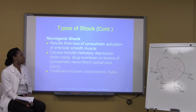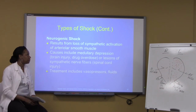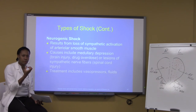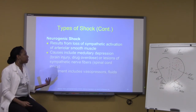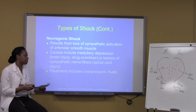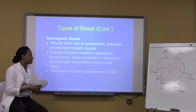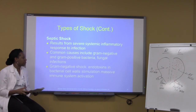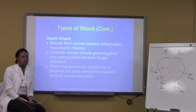Neurogenic shock comes from lost or impaired sympathetic activation, so individuals don't have contraction of the smooth muscle of the vessels, causing them to dilate. This can happen from brain injuries, drug overdose, and neurological issues like spinal cord injuries. Treatment is based on vasopressors to bring constriction back, decrease inflammation, and fluids.